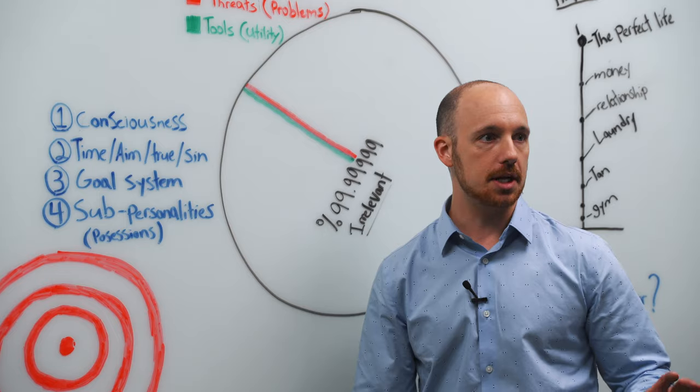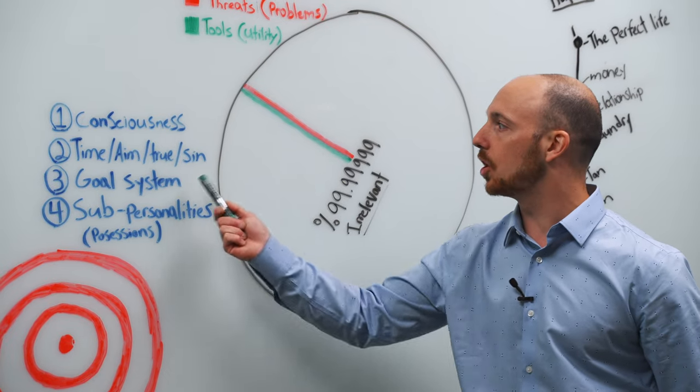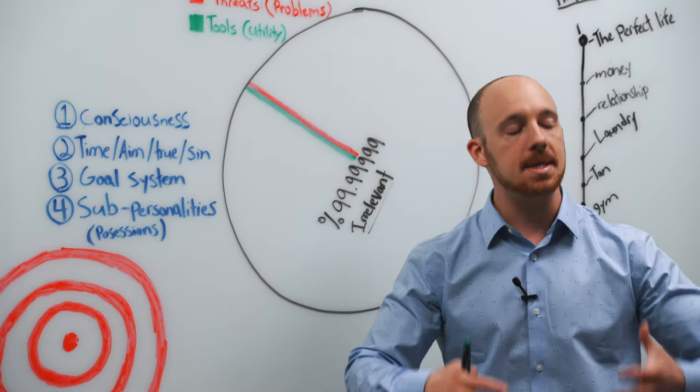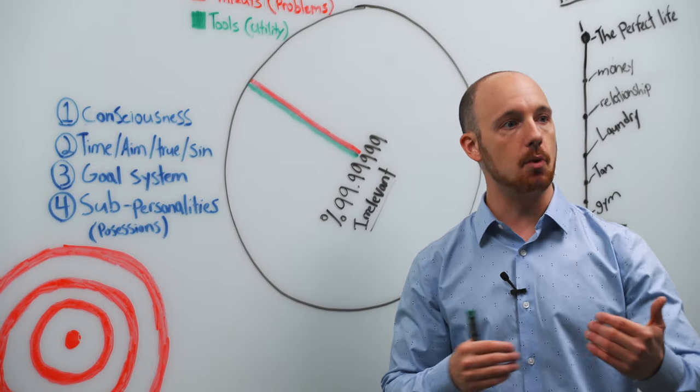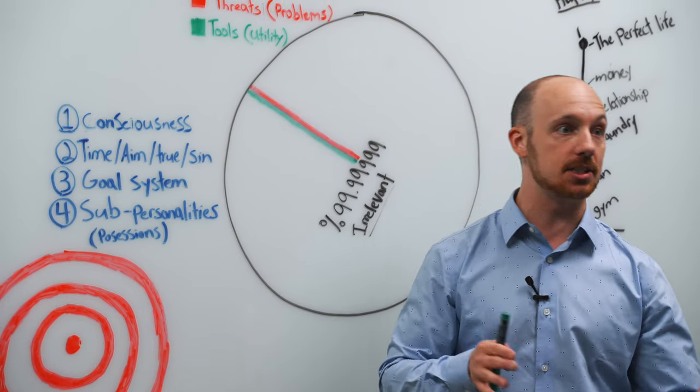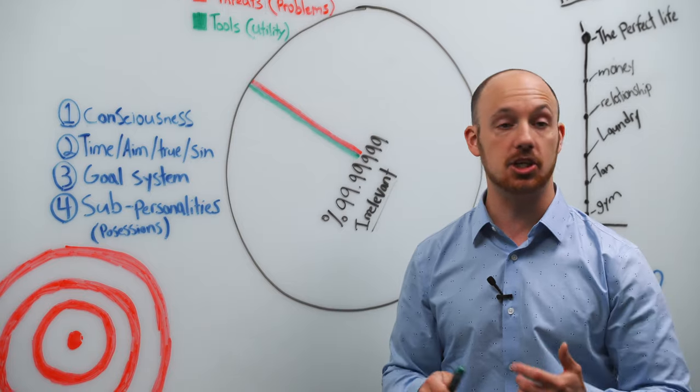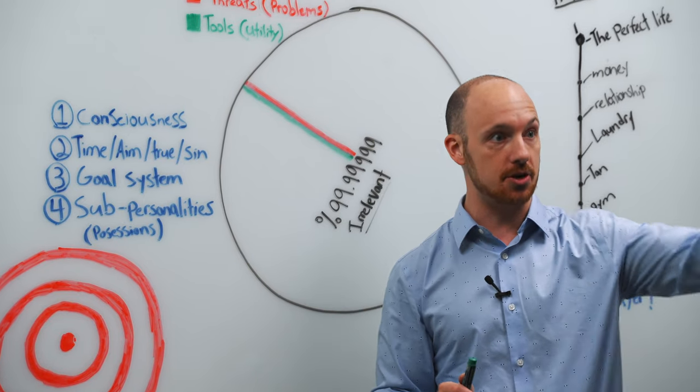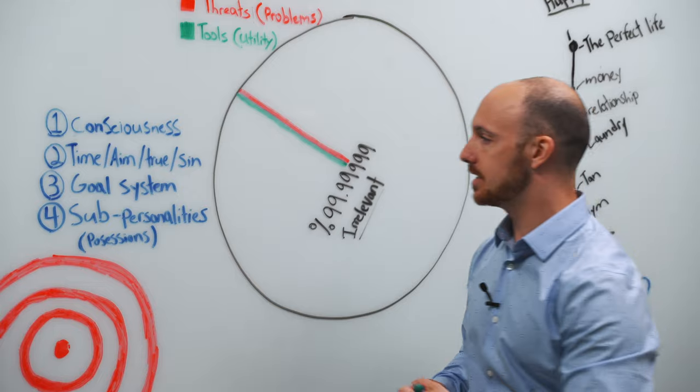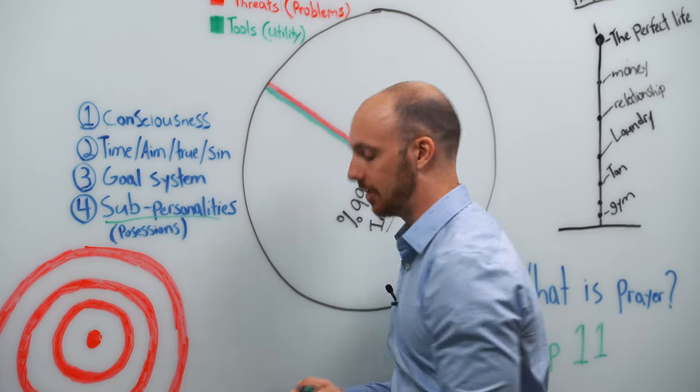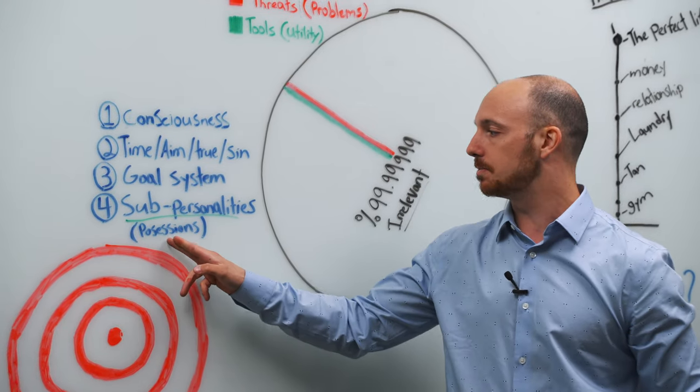So now we're starting to get somewhere. Now we're starting to tie together some concepts. What appears to you in your field of awareness and what gives you positive or negative emotion is essentially based on goals. It's based on your aim. It's based on your destination. Okay. So now we get into something like sub personalities. And lots of times I call these things possessions.